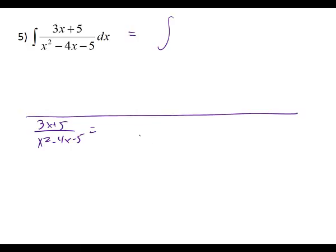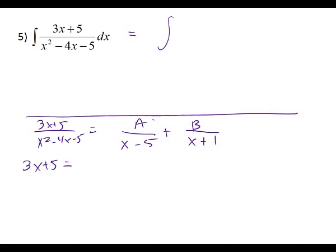All right, so the first thing we need to do is factor this thing. What does the denominator factor into? Five and one. Which one's plus, which one's minus? So we're going to set up our system: three x plus five equals... I'd have to multiply this one by x plus one, so we get ax plus a, and we have to multiply this one by x minus five, so plus bx minus five b.